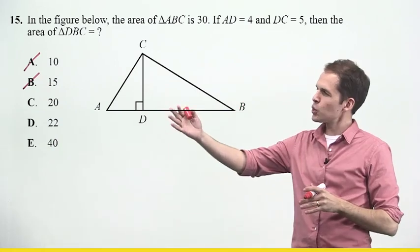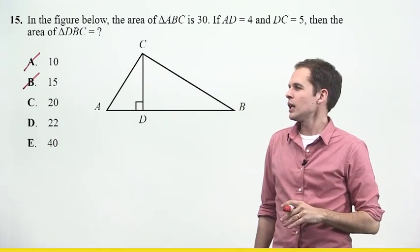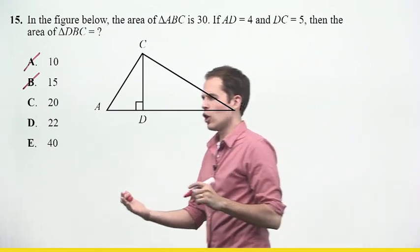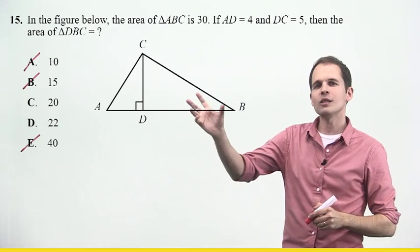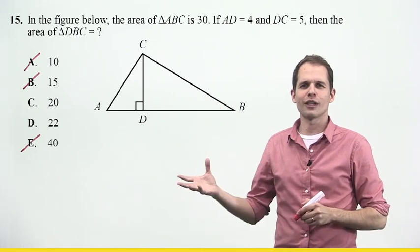Now, I look at the other ones. I see 20 and 22. Those kind of make sense. And 40 actually makes no sense at all, right? Because if the entire triangle has an area of 30, how can this part of it be larger than the 30?